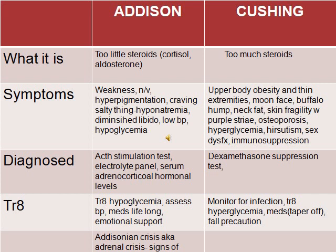Symptoms of Addison — too little steroids — are going to be weakness, nausea/vomiting, hyperpigmentation, craving salty things because of hyponatremia, diminished libido, low blood pressure, and hypoglycemia.